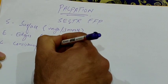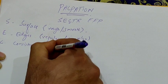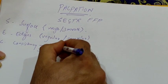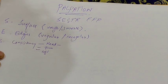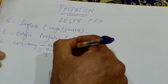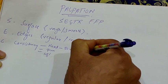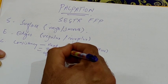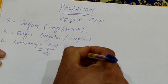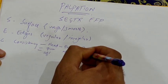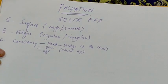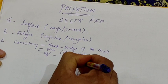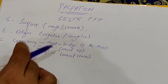C stands for consistency. Consistency can be of three types: hard, firm, or soft. To remember: if it feels like the bridge of your nose it is hard, if it feels like the nasal tip it is firm, and if it feels like your earlobe or nails it is soft. So consistency is of three types.